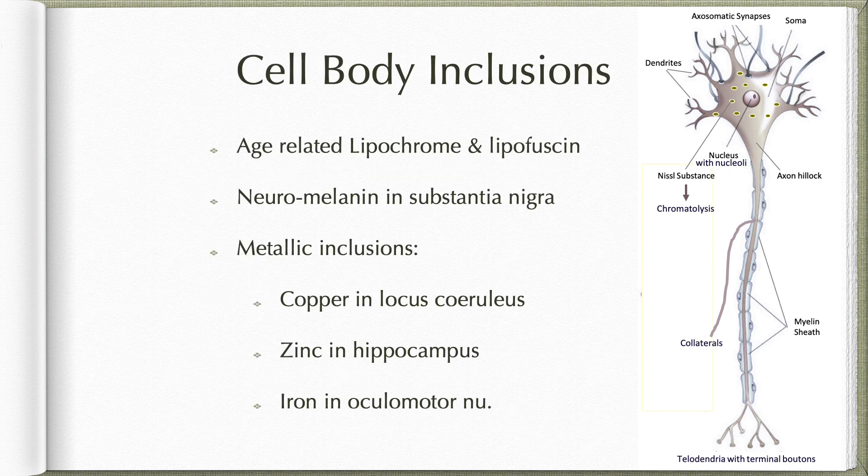The cell body also shows some other inclusions like lipochrome and lipofuscin with age, neuromelanin in the neurons of substantia nigra, or certain metallic inclusions like copper in the neurons of locus ceruleus, zinc in the neurons of hippocampus, and iron in the neurons of oculomotor nucleus.